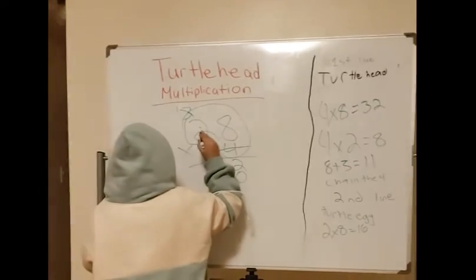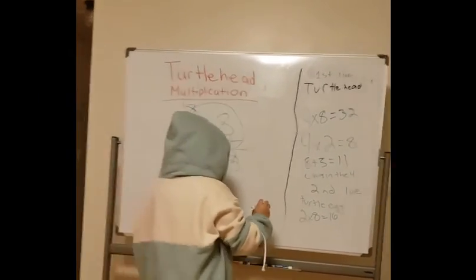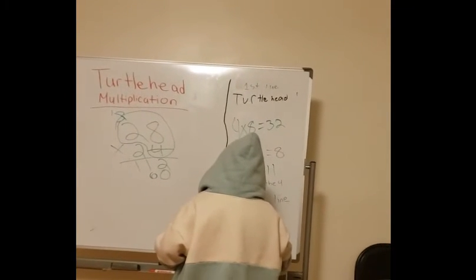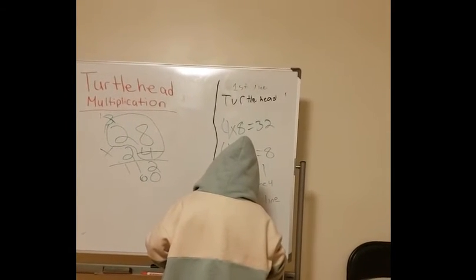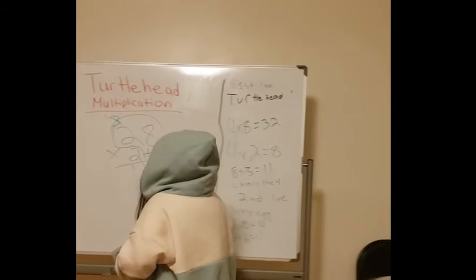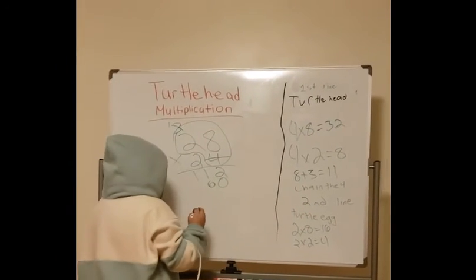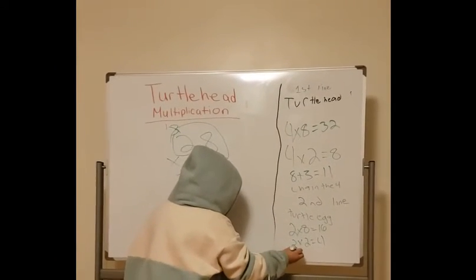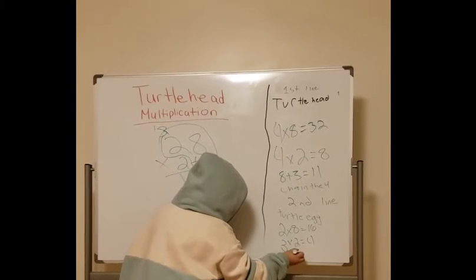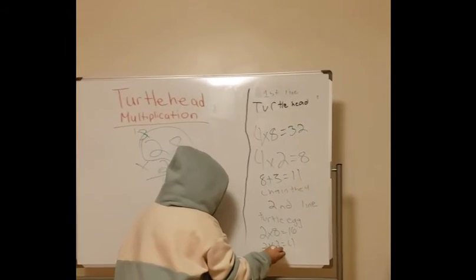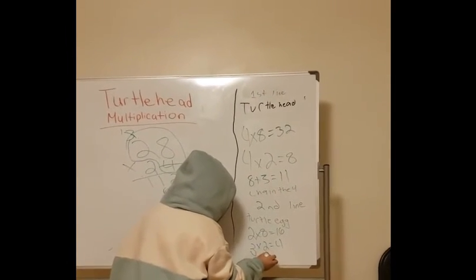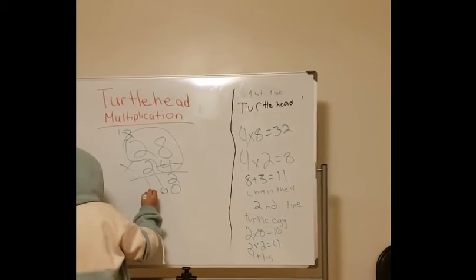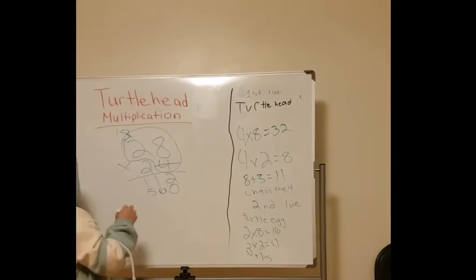Now I would do 2 times 2. 2 times 2 equals 4. Now I would do 4. Now I would do 4 plus 1. 4 plus 1 equals 5. So I would put the 5 underneath the 1.